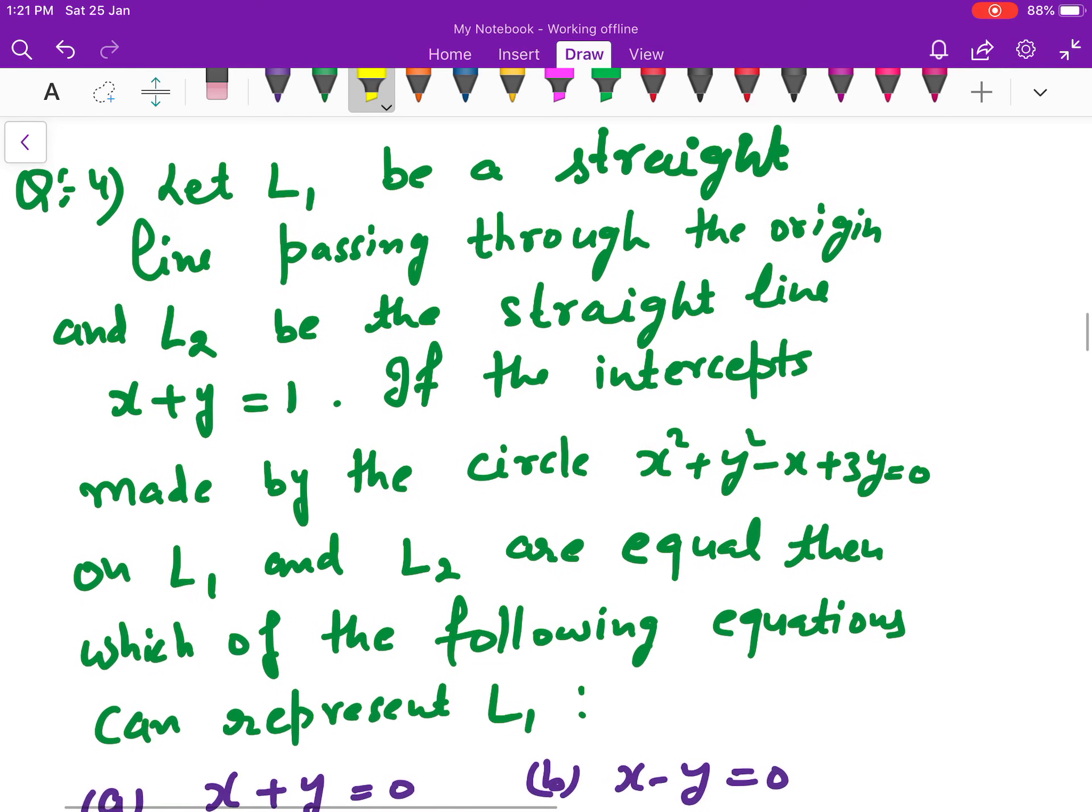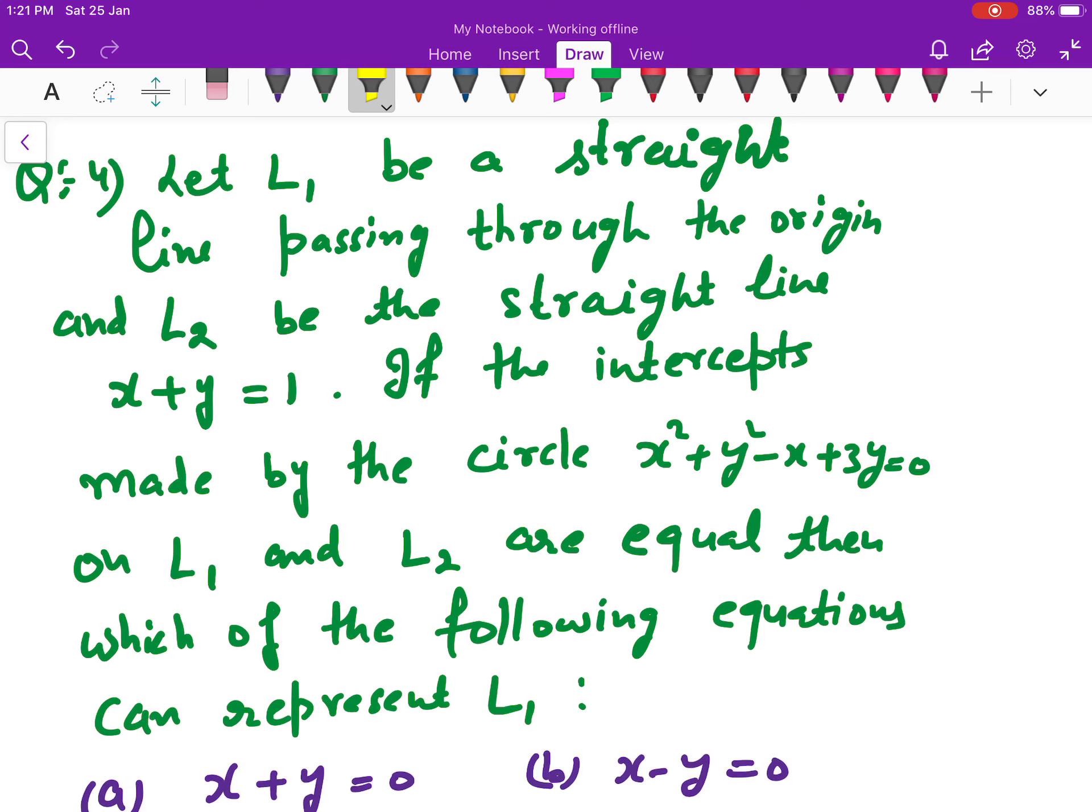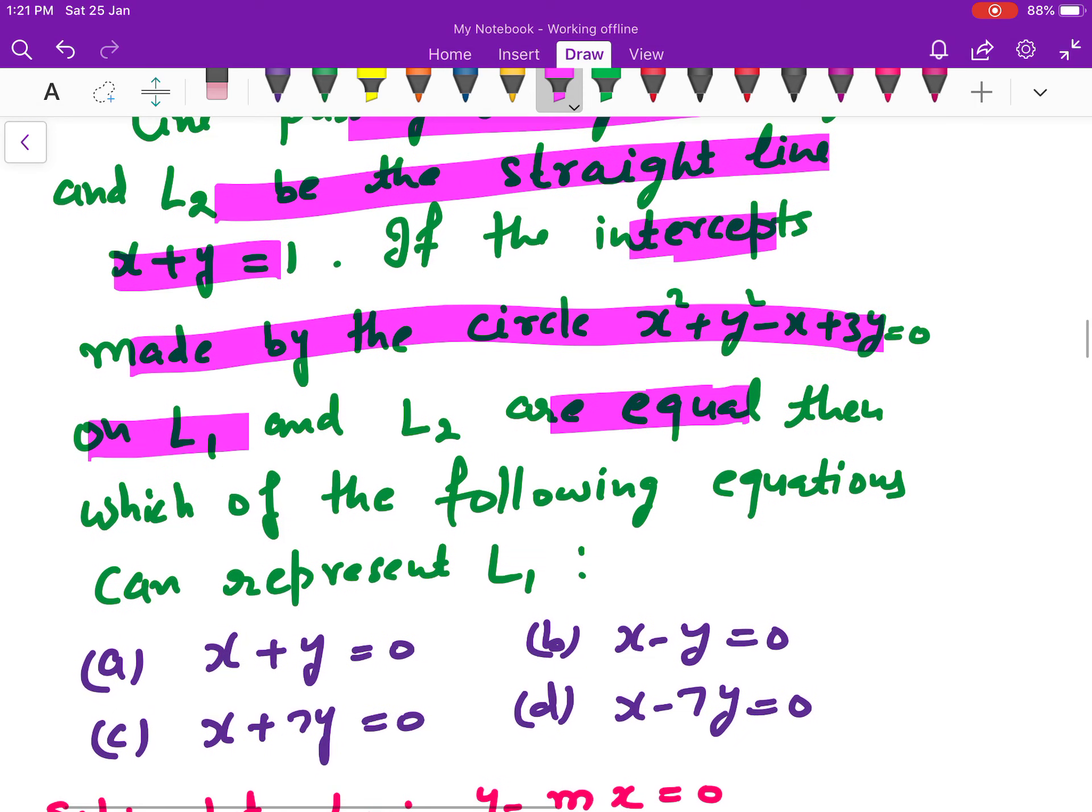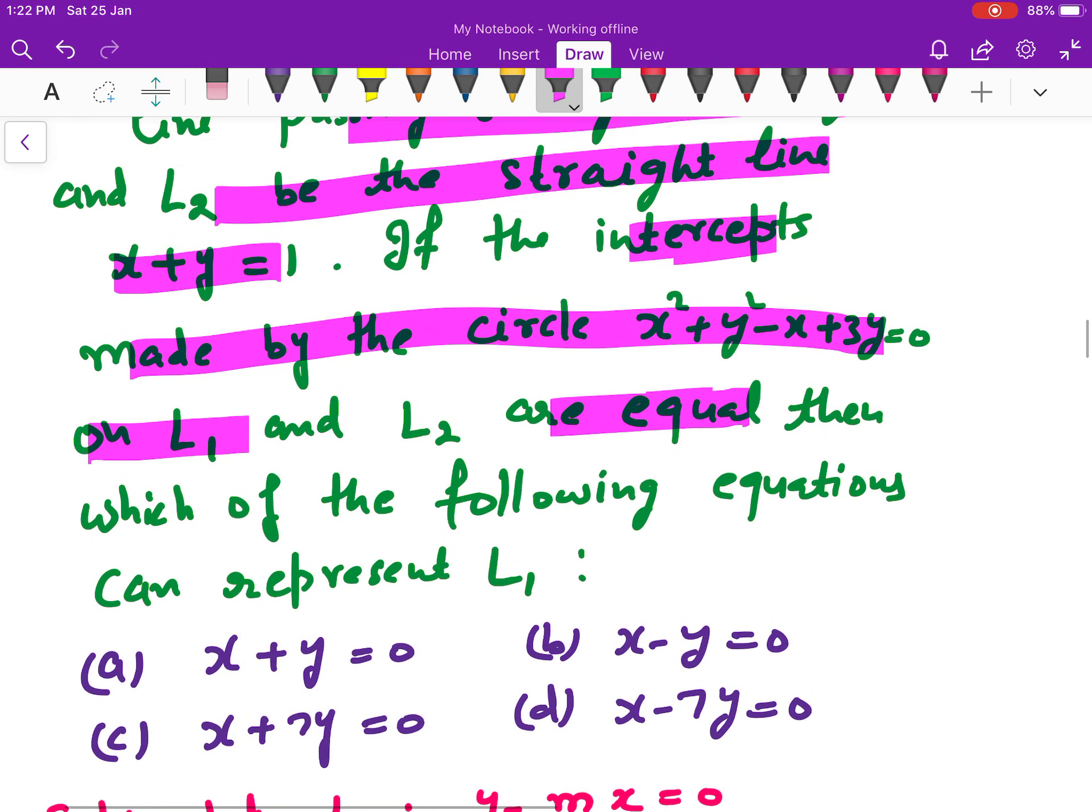The circle is a straight line passing through the region, which is straight line, given as x + y = 1. If the intercepts made by this circle on the lines L1 and L2 are equal, the intercepts are equal. One line has to pass through origin and the second line is given. We need to find which equation is L1.